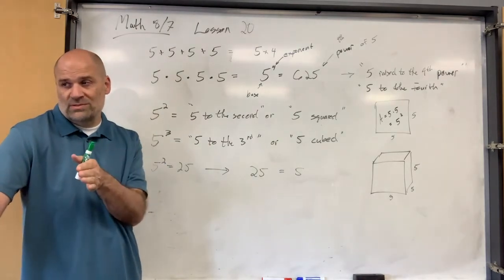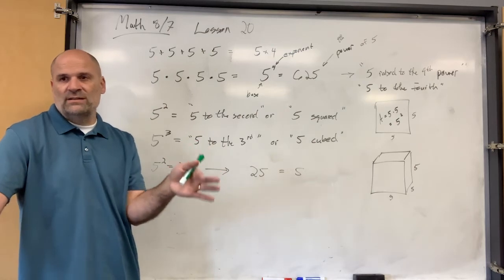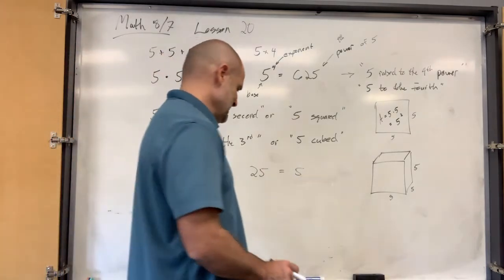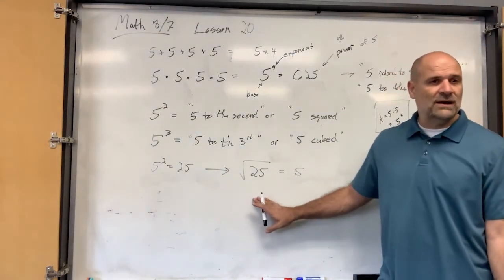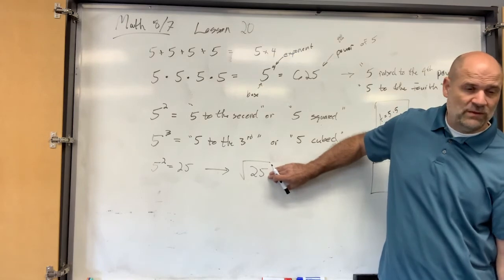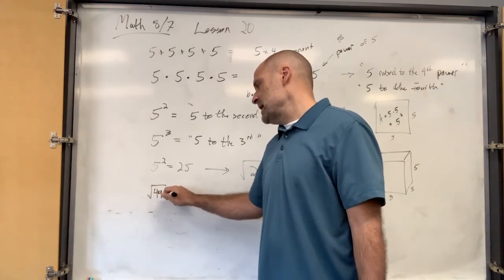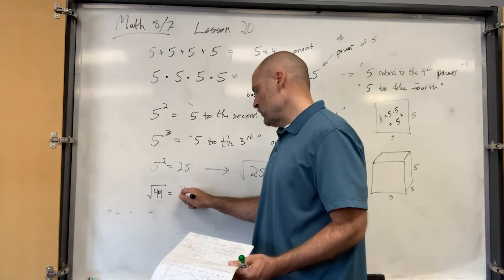Opposite of multiplication is division. Opposite of addition is subtraction. Opposite of squaring is finding the square root. Square root — you guys remember that symbol? The square root of 25. You have to ask yourself: what number squared equals 25? Or what number times itself equals 25? And that's five. What is the square root of 49? Seven — because seven times itself is 49. So the answer is 7.